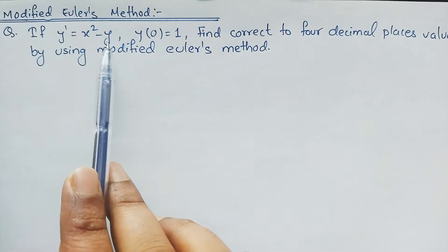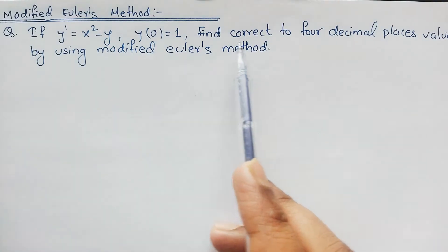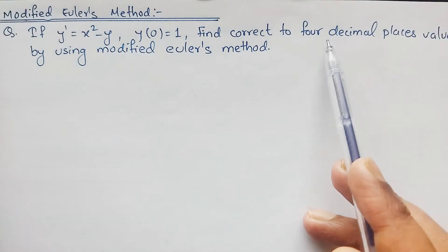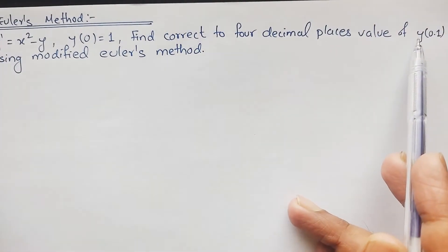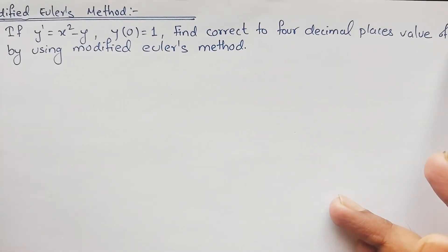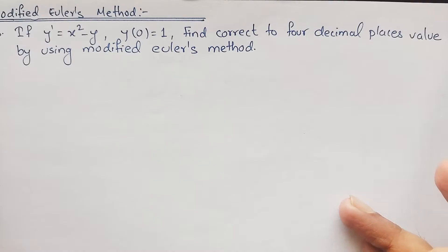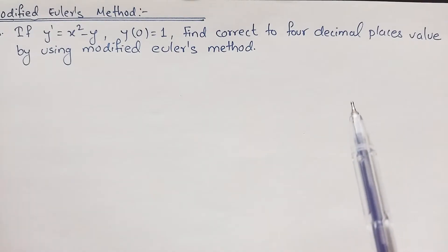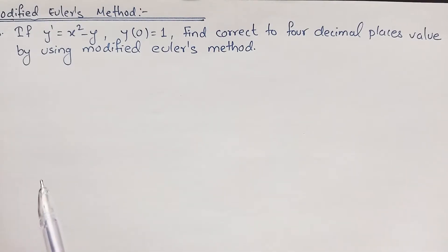The question we are solving is: if y' equals x squared minus y, and y(0) equals 1, find the value of y(0.1) correct to four decimal places using Modified Euler's method. We are going to learn how to solve this in this video, so without any further delay let's get started.